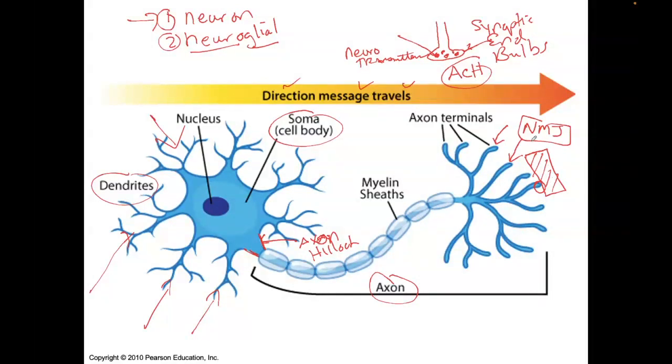So how does this muscle contract? There has to be a neurotransmitter communicating with it to tell it to contract, and that neurotransmitter is called acetylcholine.